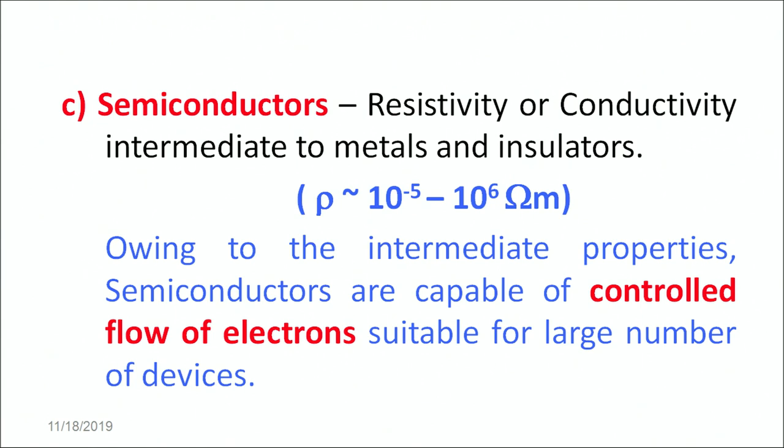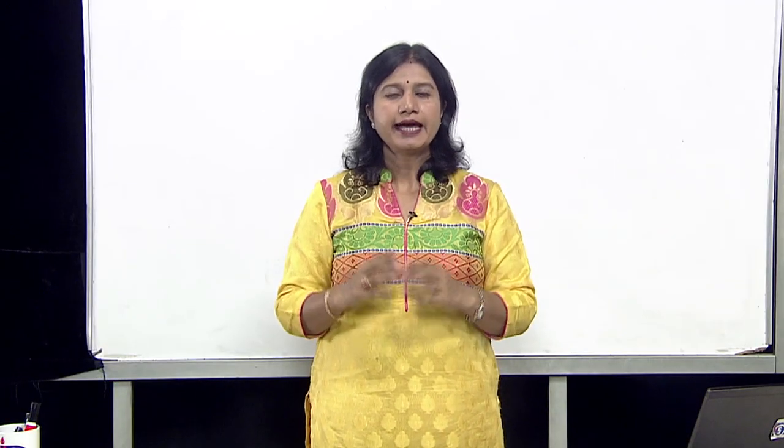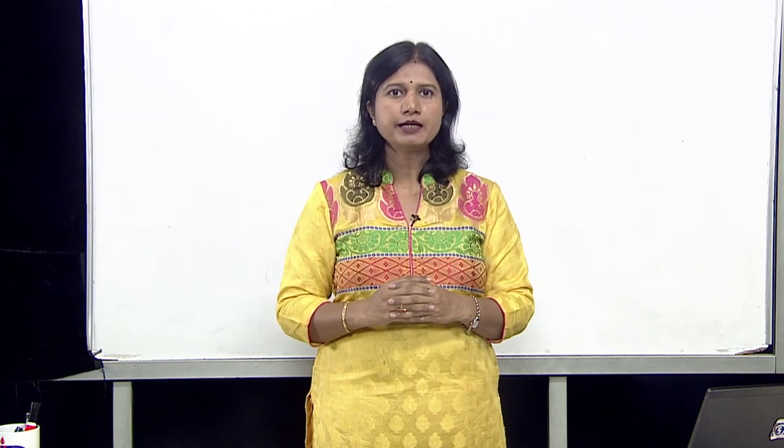Owing to this intermediate property, the semiconductors are capable of controlled flow of electrons. This controlled flow of electrons enables them to be used for a wide number of devices. The whole technological advancement of the 20th century is attributed to these semiconductors. To classify materials into these broad categories, energy bands play a very important role. So let's now begin with what energy bands in solids are.